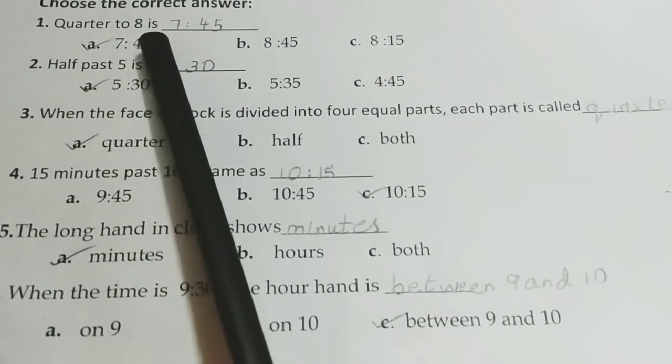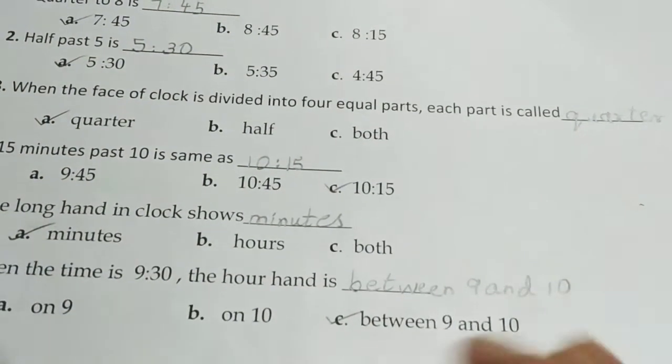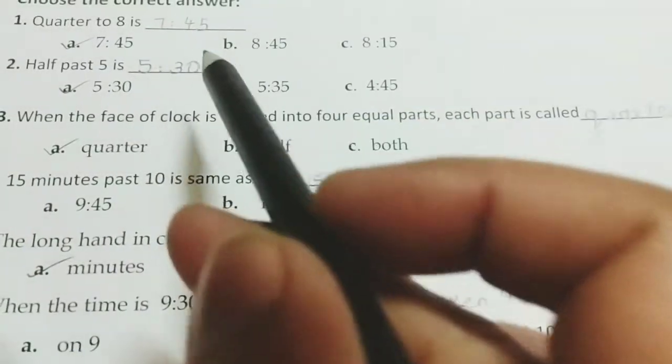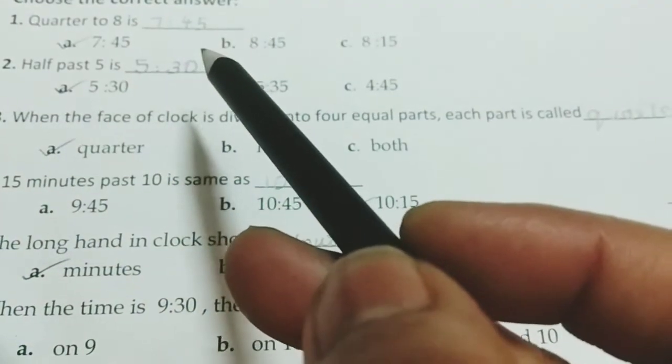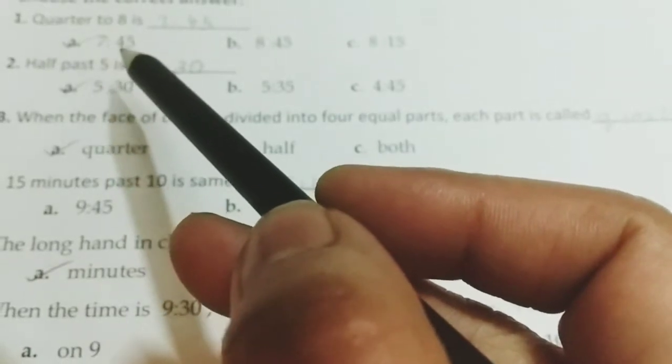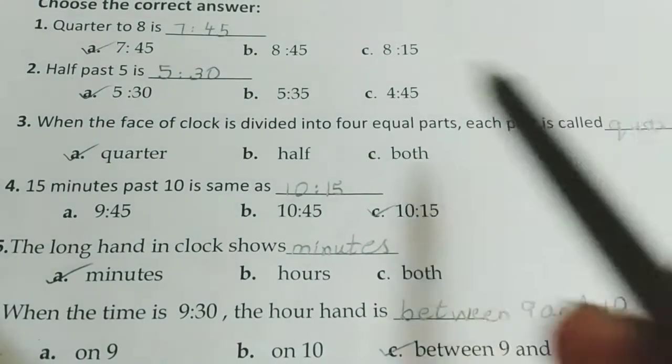Quarter to 8 is dash. 7.45, 8.45, 8.50. What is that? Quarter to 8 means quarter is less to 8. It is 7.45. The time is 7.45.